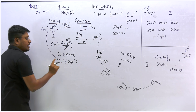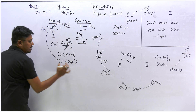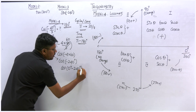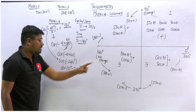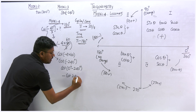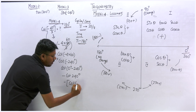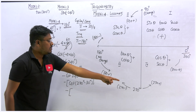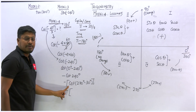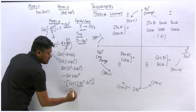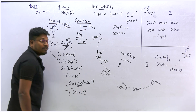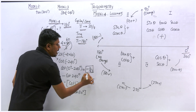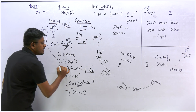Now cot of minus 240 is solved using model number 3. Write it as cot of (0 minus 240). Zero minus 240 lies on the fourth quadrant; in the fourth quadrant cot is negative, giving minus cot of 240. Rewrite 240 as 270 minus 30 — that's the third quadrant where cot is positive. Since cot of 270 changes to tan, the result is minus tan 30, which equals minus 1 by root 3.